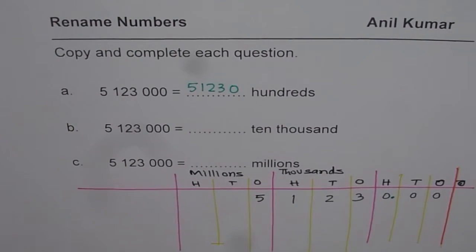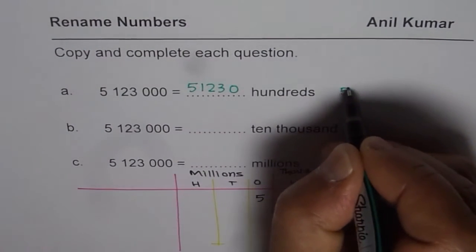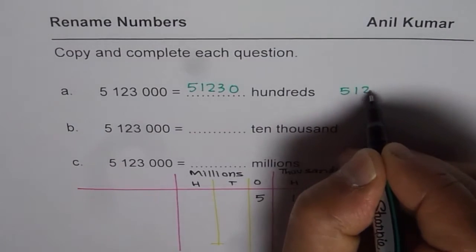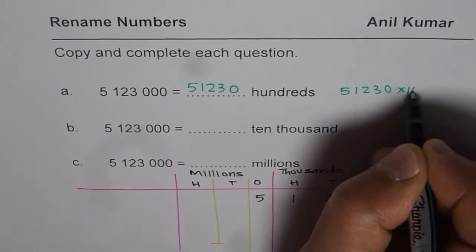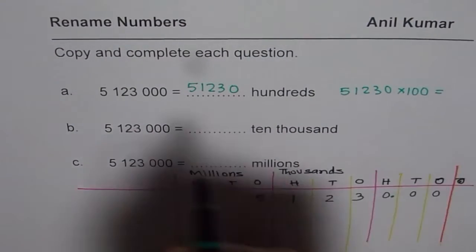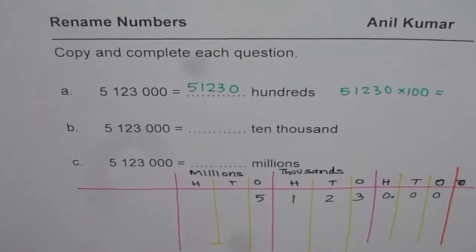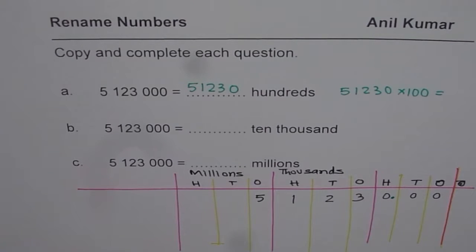So get rid of those two zeros and put a decimal — you get that many hundreds. If you multiply 51,230 by one hundred, you get your number back. It is the same number written in a different name, and that is why we call it renaming numbers. I hope the concept is clear.